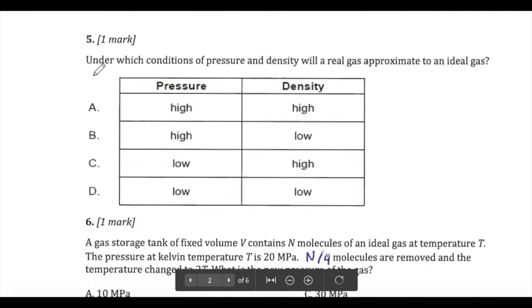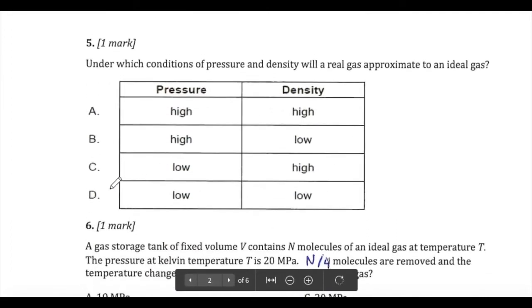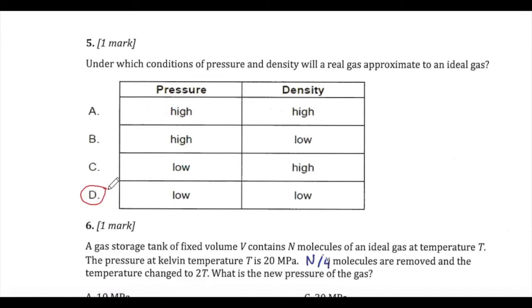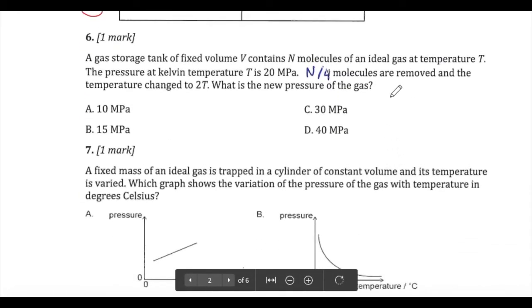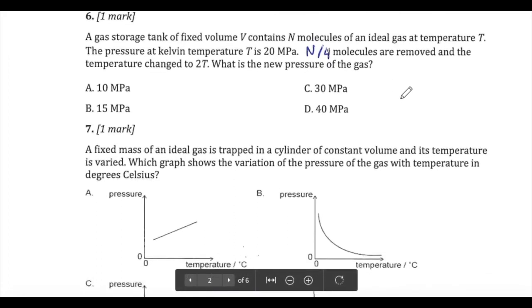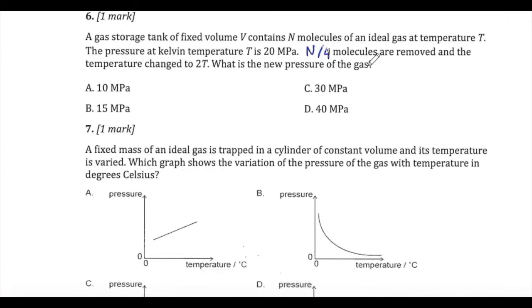Question five: real gases approximate ideal gases when they are in the most 'free' scenario — under low pressure and low density. This is when they make the least collisions, lose less energy, and behave most like an ideal gas. The answer is D.